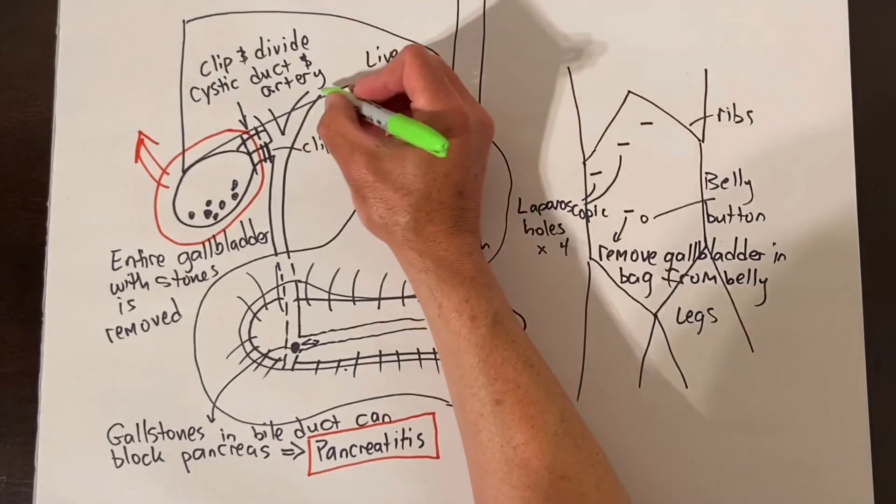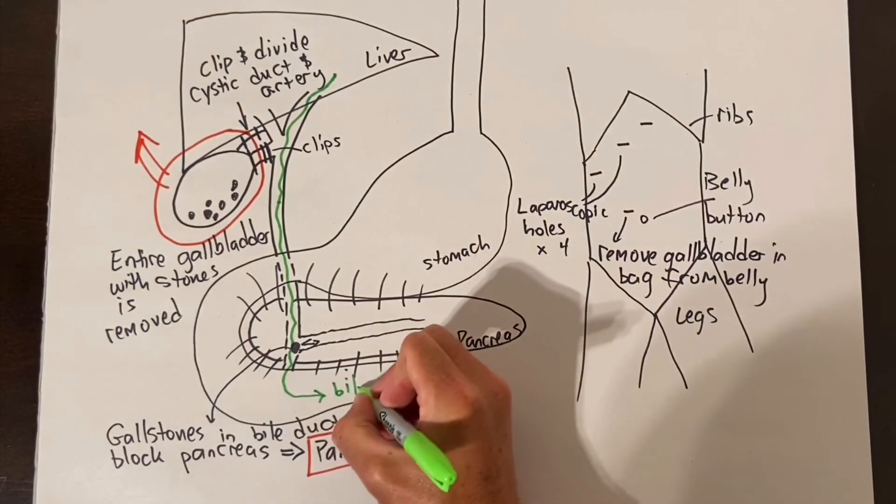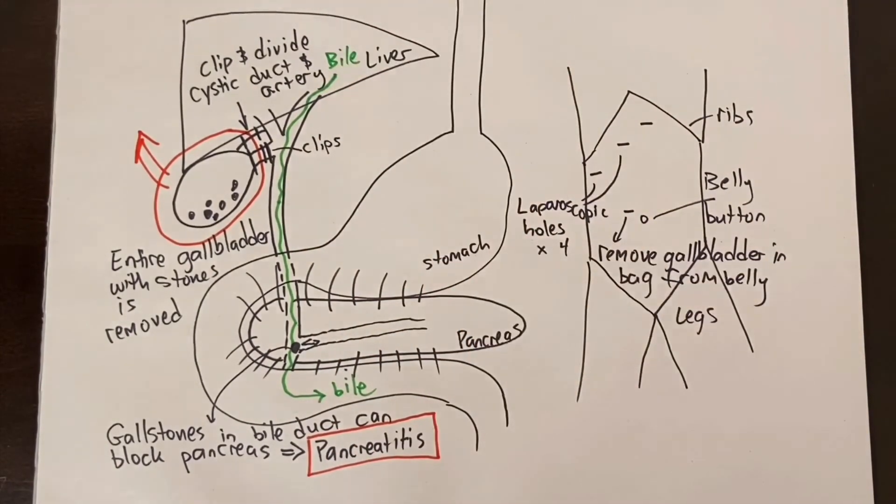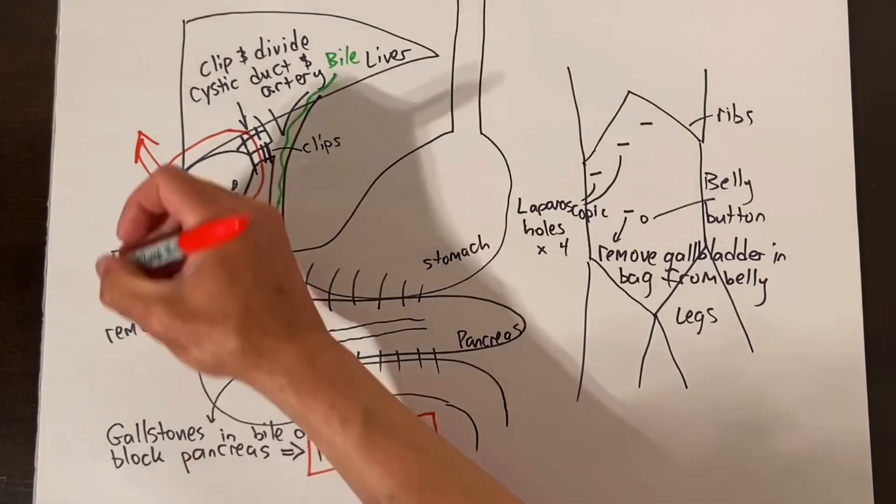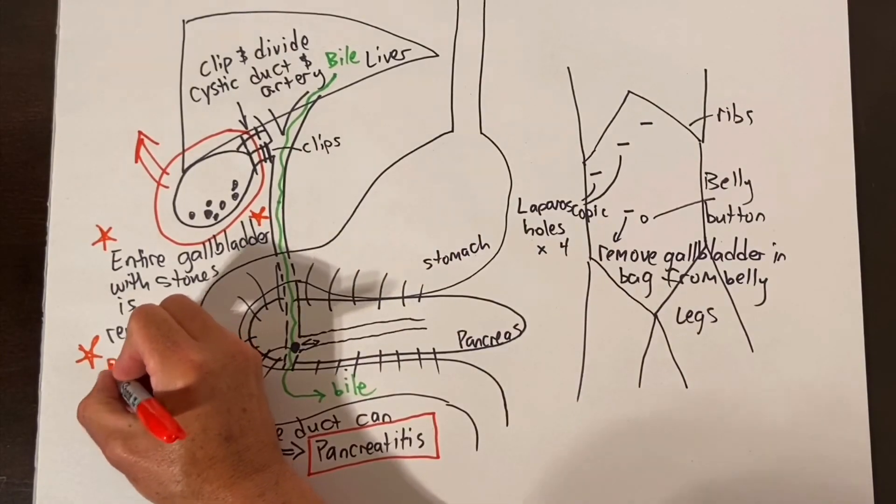So to summarize, the goal of all gallbladder surgery is to be sure that there is good flow of bile out of the liver and into the intestine through the main bile drainage tube and also to remove the source of any gallstones which is the gallbladder itself.